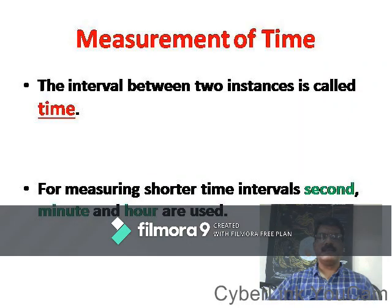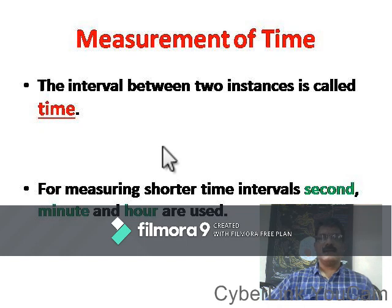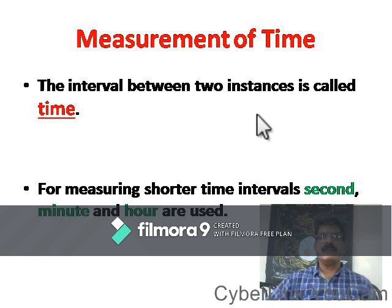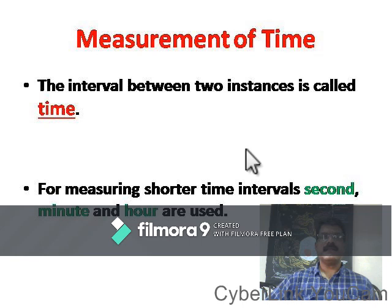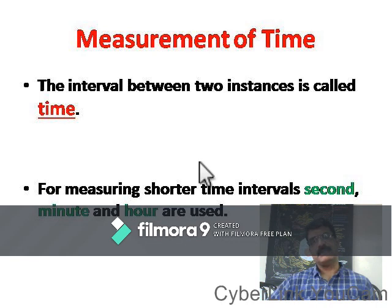Children, let us see how we can measure time. Time means the gap or interval between two instances. Time can be measured by units. The smallest unit of time is the second, and its larger units are minutes and hours.